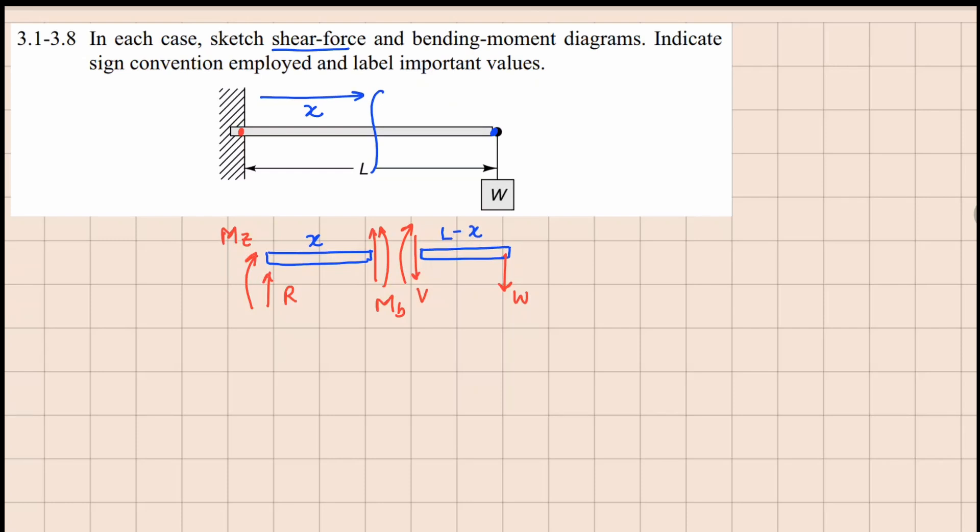If I analyze the right part from here, I get V plus W is equal to 0, so that gives us value of shear force as minus W. And your bending moment MB, if I take moment about this point, plus W times L minus x equals 0, or your MB is equal to W into x minus L.